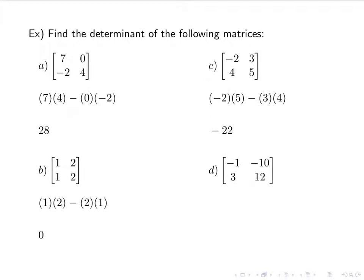For our last determinant example, we have negative 1, 3, negative 10, 12. So that's negative 1 times 12 minus negative 10 times 3. That's negative 12 plus 30, which gives us 18.